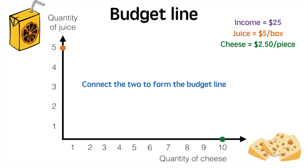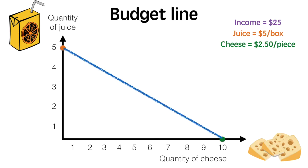Connecting these two points together gives us our budget line. It is possible for the consumer to purchase any combination along and within this line given their budget constraint of $25. Anything below the budget line is affordable. Combinations beyond the line are not affordable to this consumer.